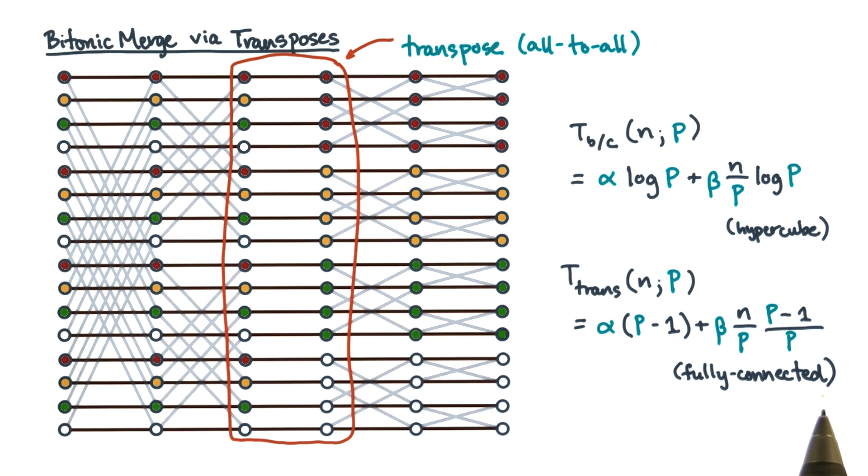If the network is fully connected, then each process will send p minus 1 messages, and the messages will be of size n over p squared.